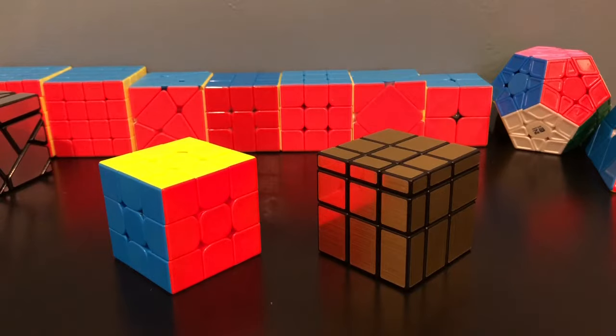The mirror cube is a 3x3 shape mod, which means that even though the pieces are different shapes, it's going to be the same solution as a 3x3.